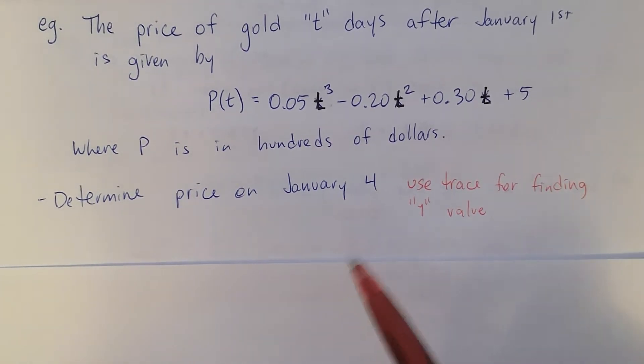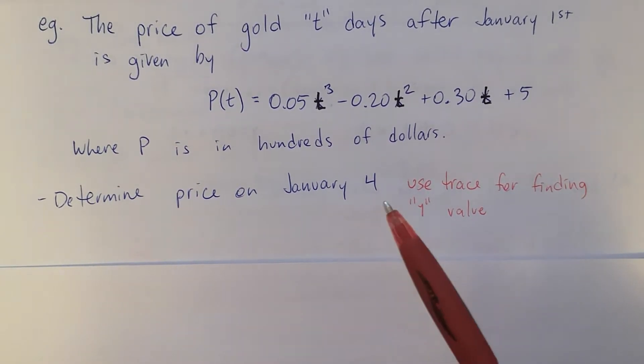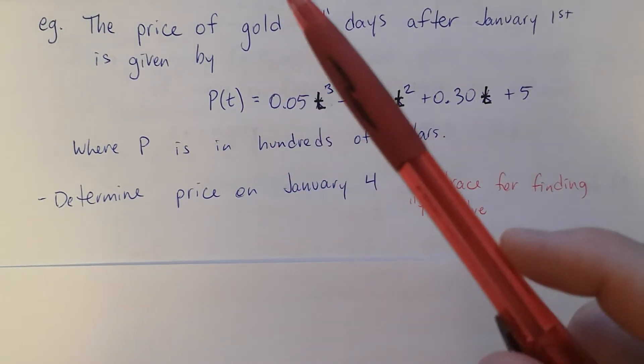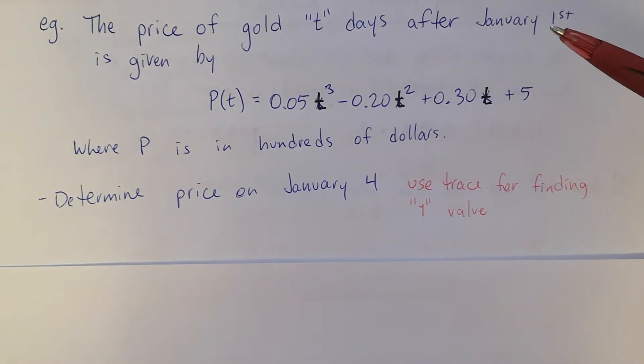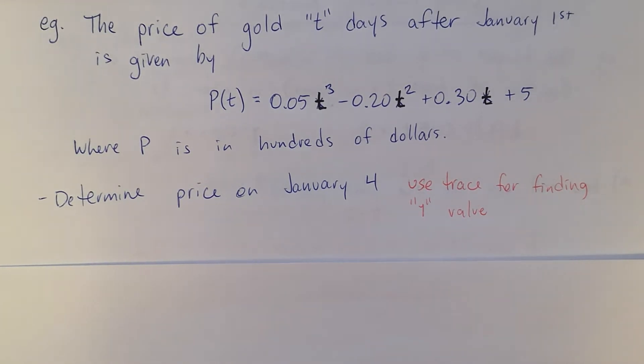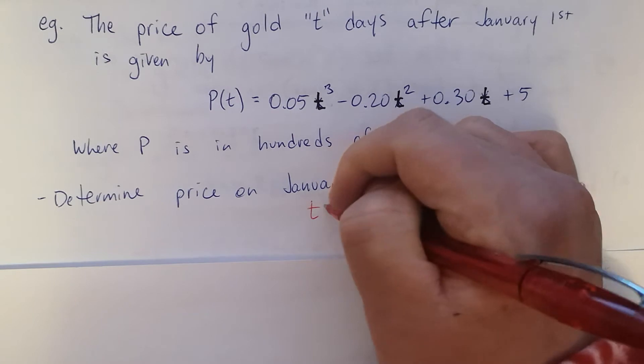Okay, we want to find the price on January 4th. So what's that value of T? Well, it says T is the days after January 1st. I think you'll agree. January 4th is three days after January 1st. So like January 1st would be T equals zero, and then you add one each time. So January 4th is T equals three.